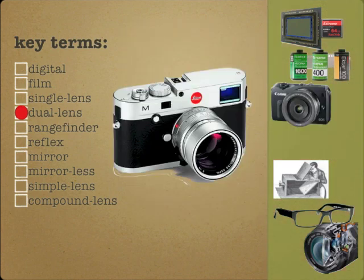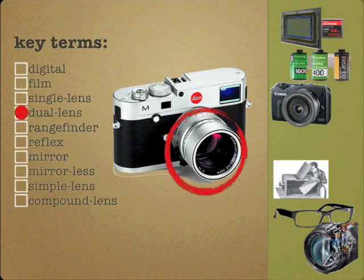Dual lens. A dual lens camera uses one lens to capture the image to the digital sensor or film, and a second lens to preview the image. Although this camera looks like it could be a film camera, it is digital — in fact, it's a very nice digital camera with a 24 megapixel image sensor, retailing for around $7,000. The manufacturer, Leica, created some of the best-loved film cameras used by professional photojournalists during the 20th century.